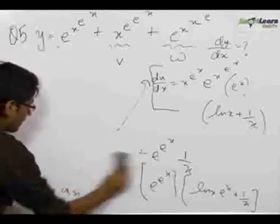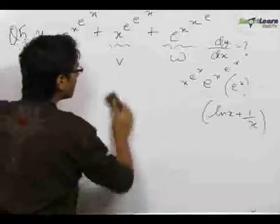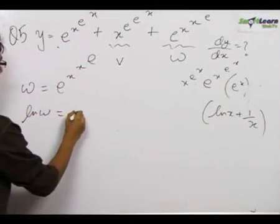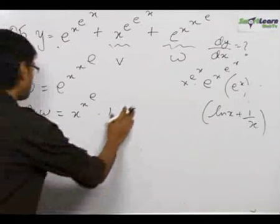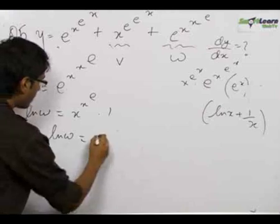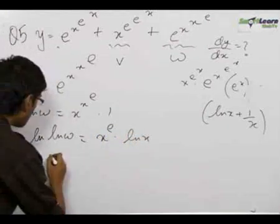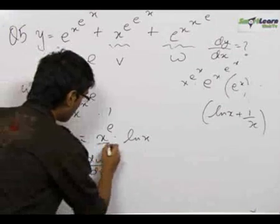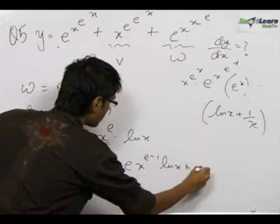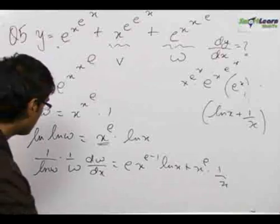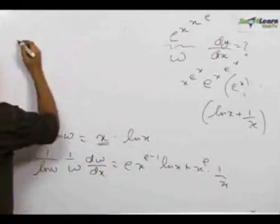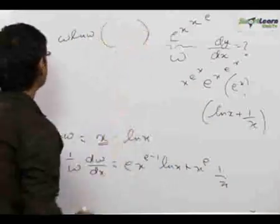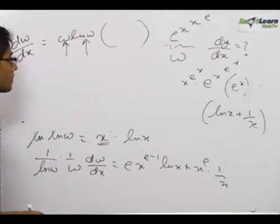The only remaining term is w, where w equals e to the power x to the power x to the power e. Taking ln of both sides gives ln w equals x to the power x to the power e. Taking ln again gives ln(ln w) equals x to the power e into ln x. Differentiating both sides, 1 upon ln w into 1 upon w into dw by dx equals, by the product rule, e into x to the power (e minus 1) into ln x plus x to the power e into 1 upon x. So dw by dx equals w times ln w times that whole expression, and we substitute the values of w and ln w to get dw by dx.